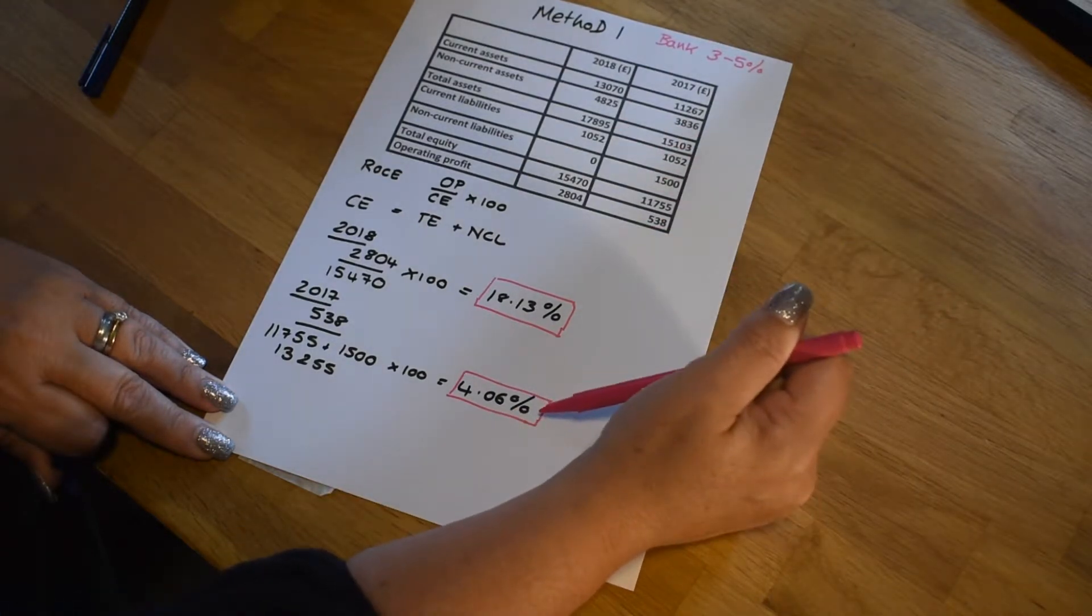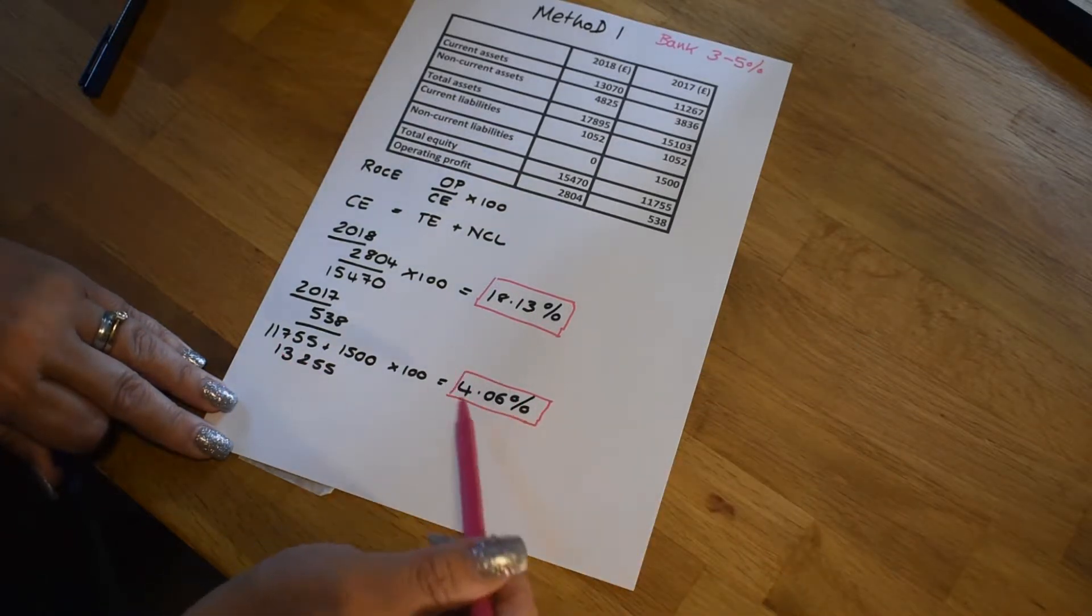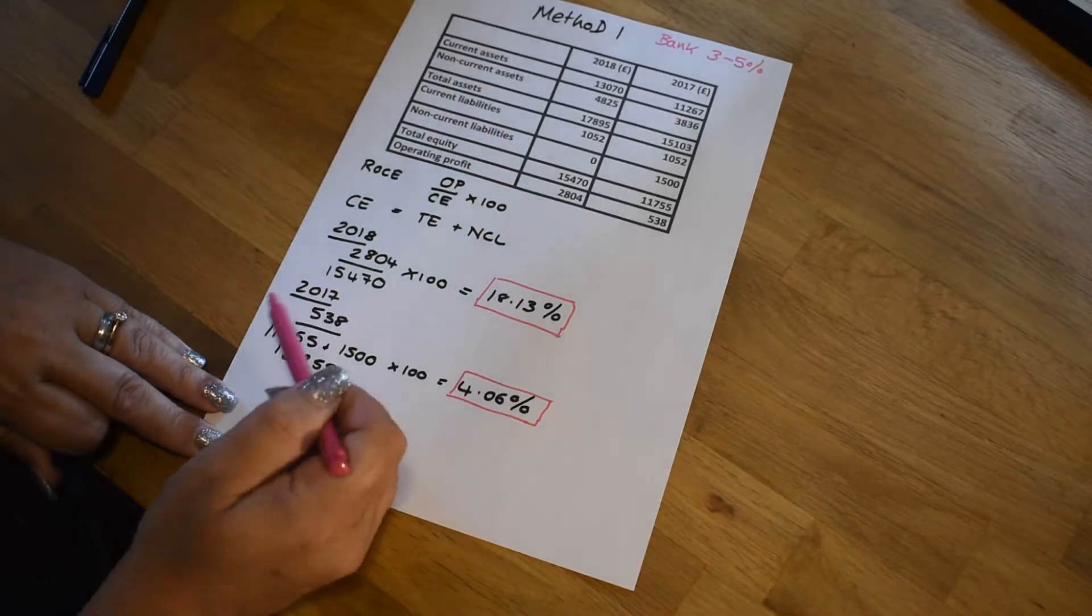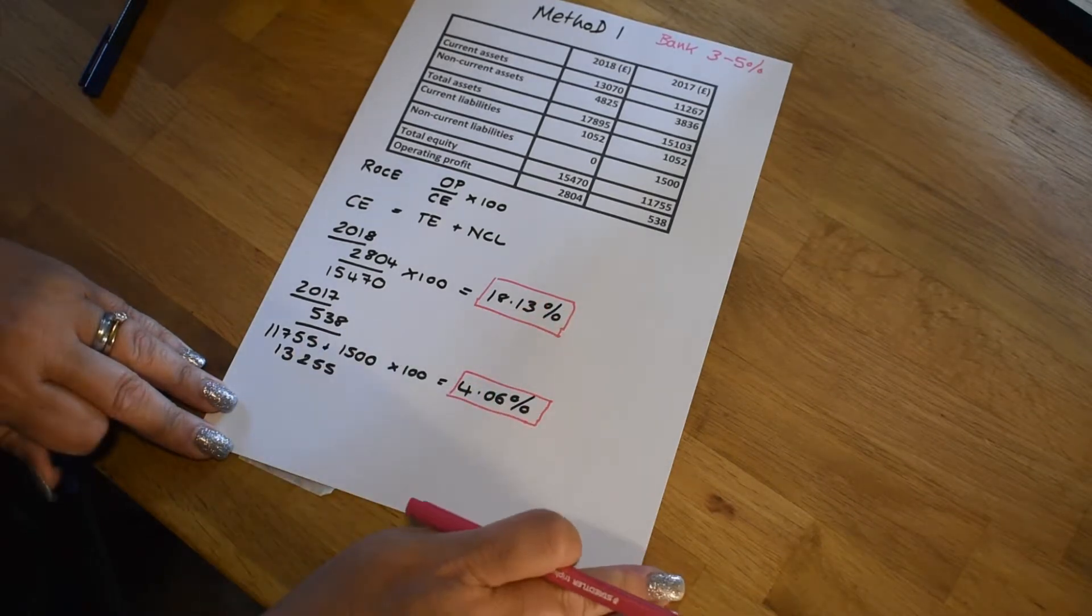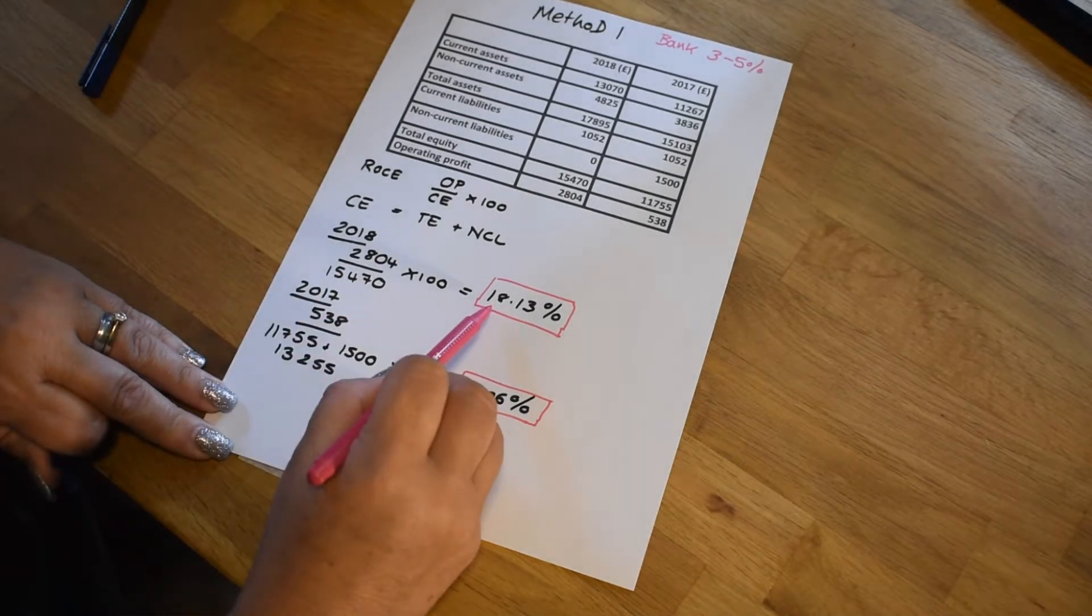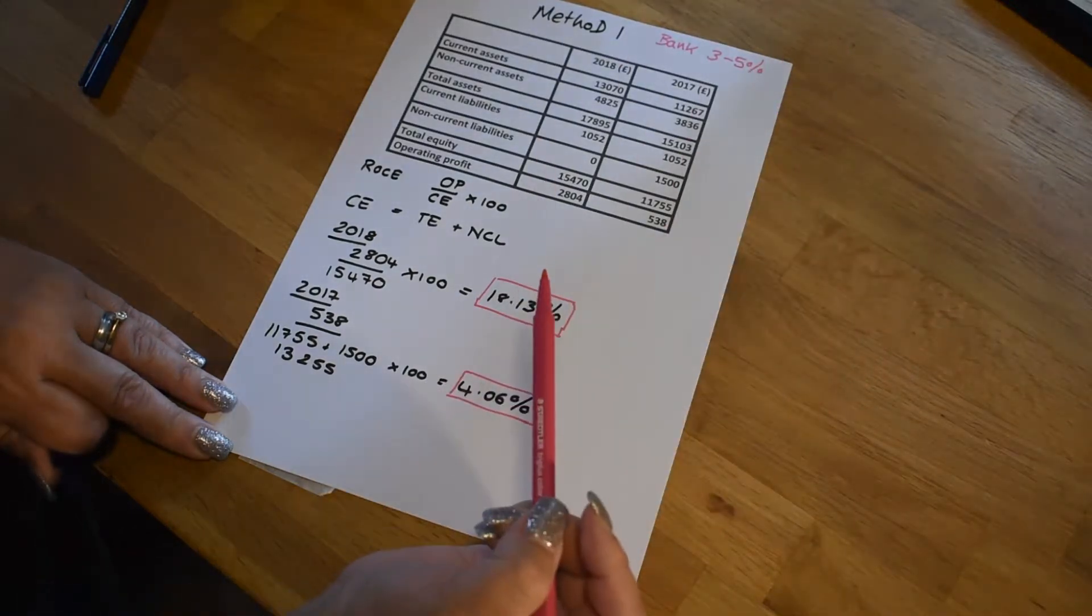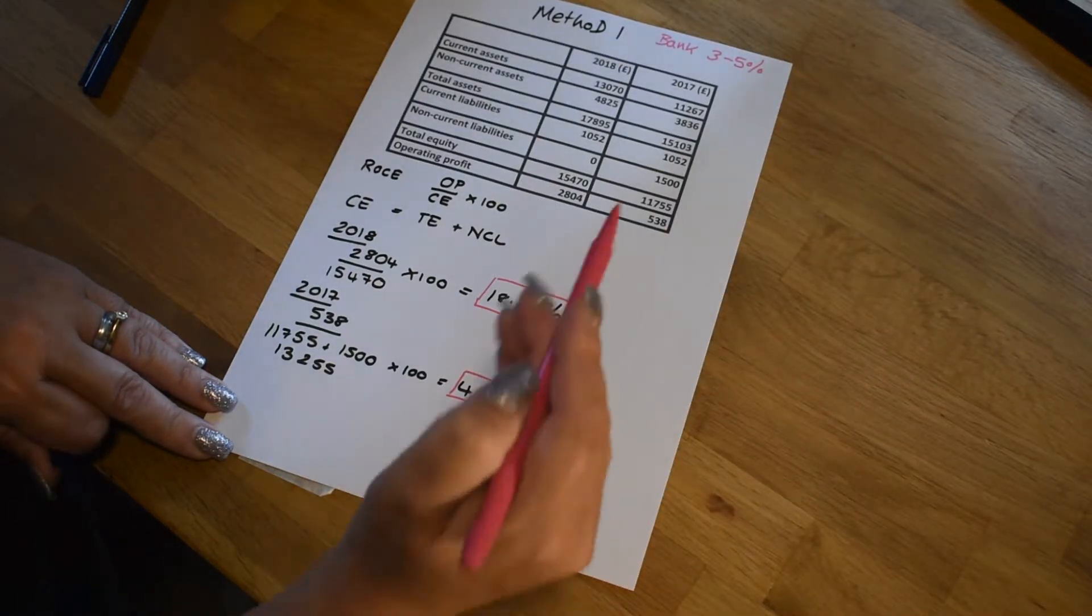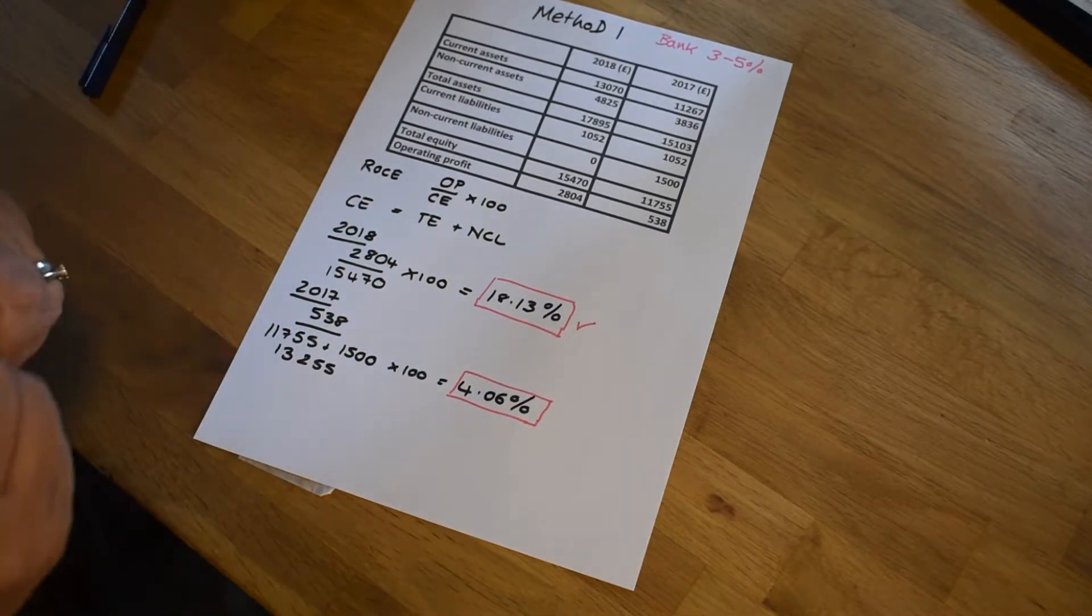And in 2017, an investment of 4% would have been extremely risky. You wouldn't want to have done that. So if it was that year, you would suggest that whoever it was that was investing their money should take it elsewhere. But in 2018, a return on investment of 18.13% is much, much higher than anything that the bank could possibly offer you. So this would definitely be a very good investment. So that's method one.